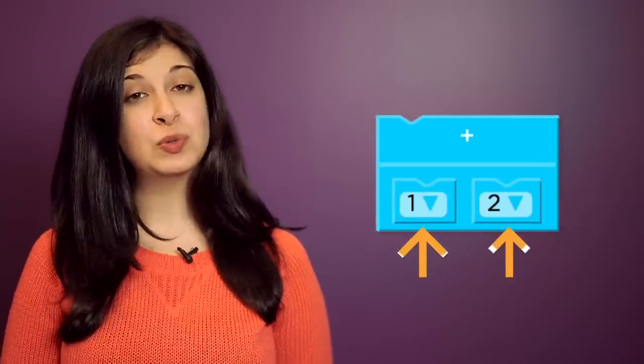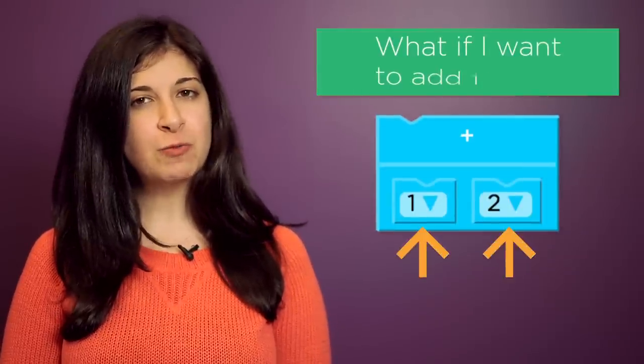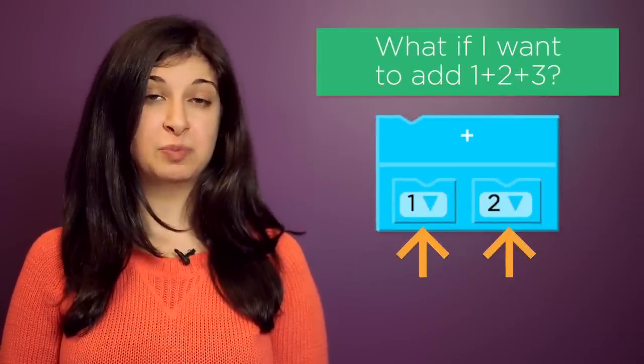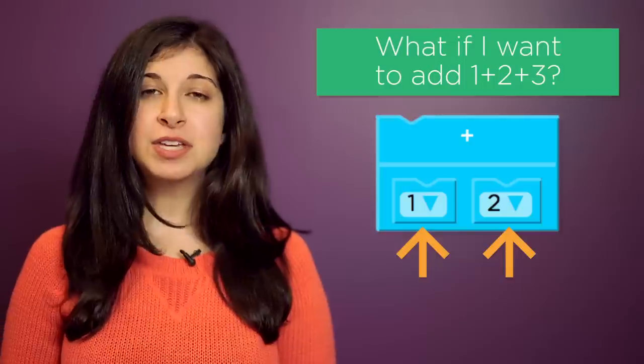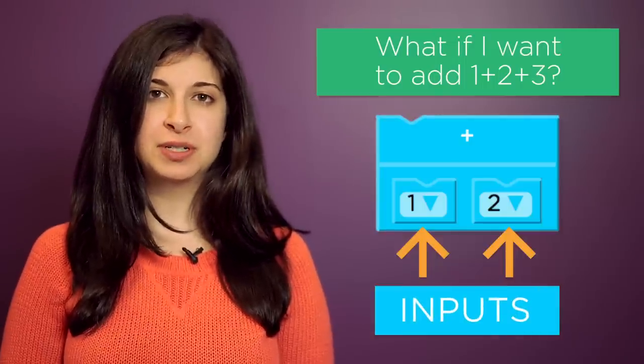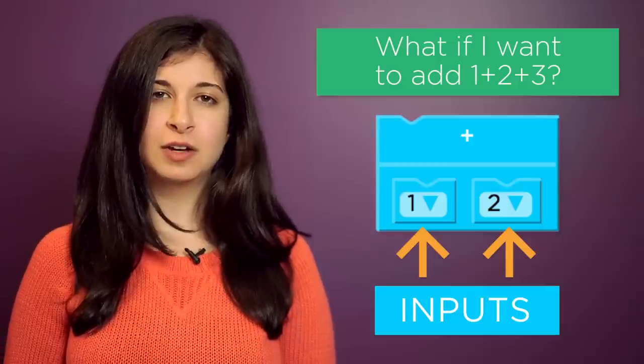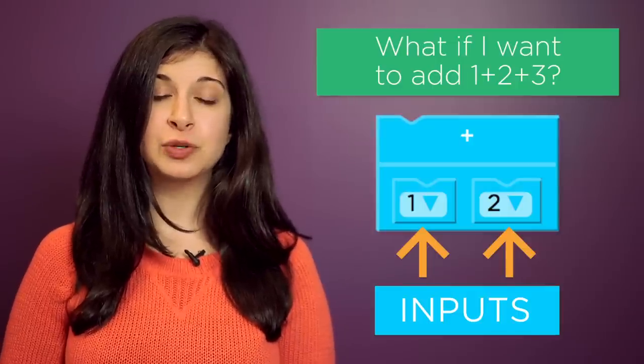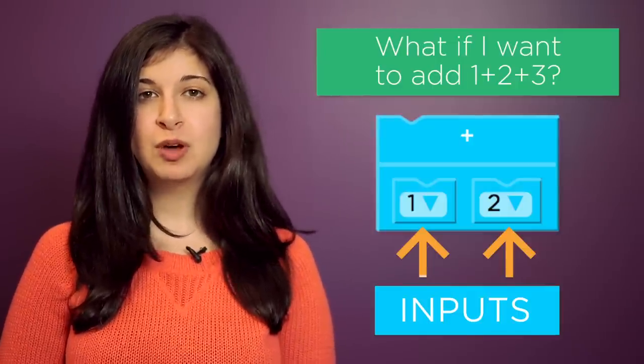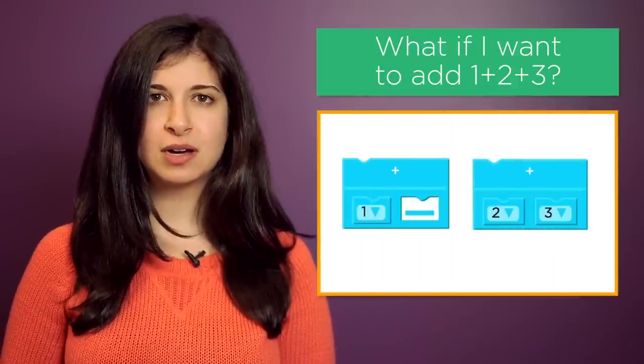You may have noticed the evaluation block only has two slots, but what if I want to add one plus two plus three? Think of each of these slots as an input. Each input on an evaluation block can take a value, like one or two, but they can also take a whole other evaluation block.